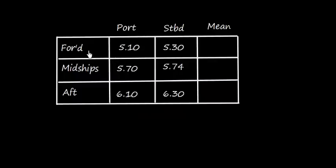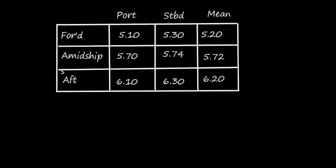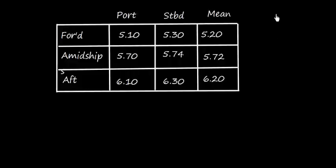Now let's look at the observed drafts. Forward draft: port side 5.10 m, starboard 5.30 m — mean is 5.20 m. Midship draft: 5.70 and 5.74 m — mean is 5.72 m. Aft draft: 6.10 and 6.30 m — mean is 6.20 m. We have taken the mean of port and starboard drafts to reduce them to the centerline.